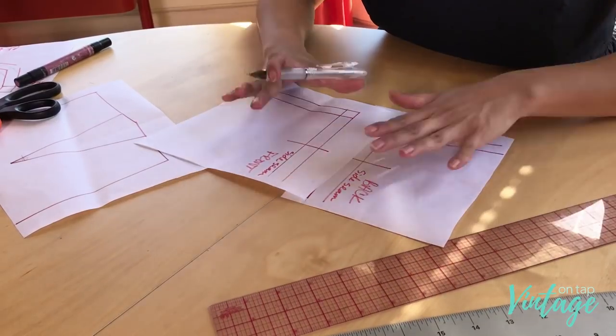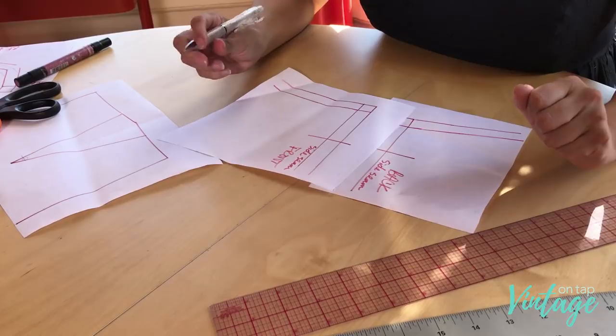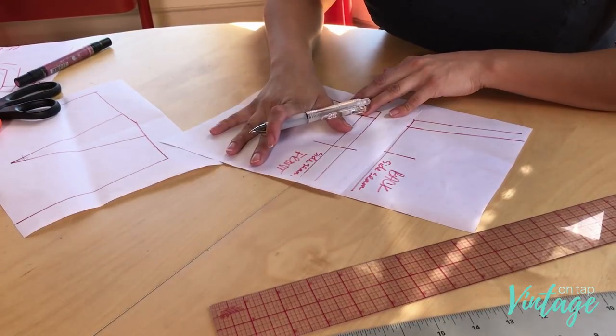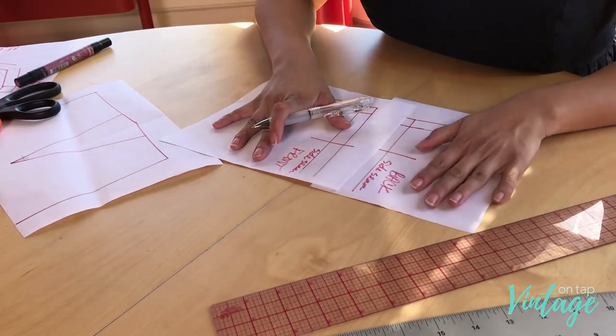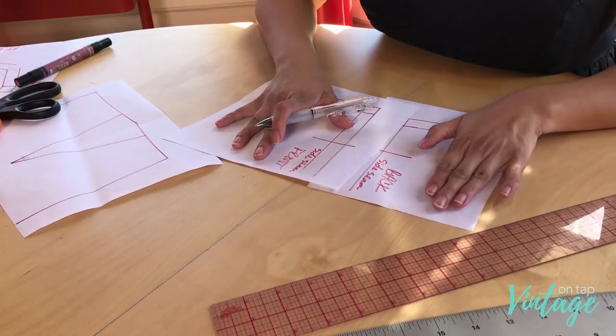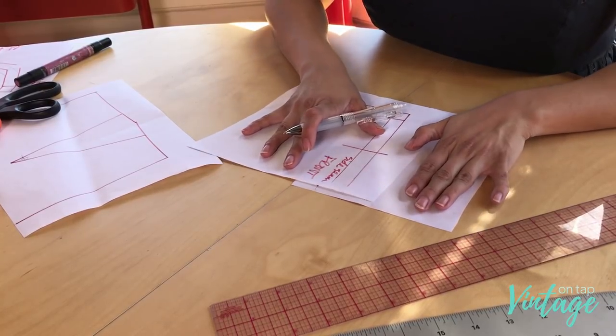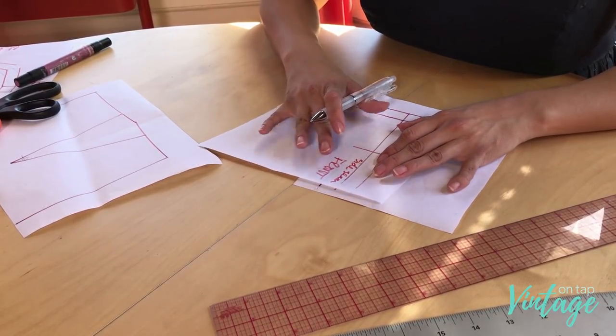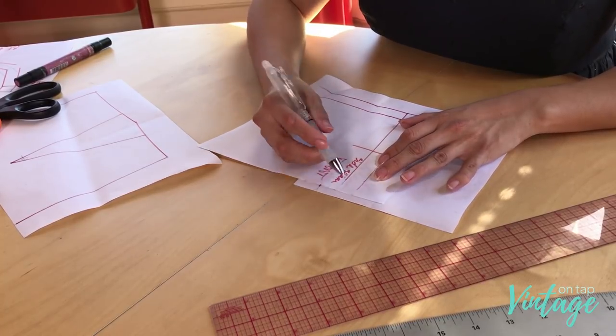The second example of when it's a good time to use your French curve is if you have two pattern pieces that are not lining up in the side seam. Let's say you've adjusted your front pattern piece and now you need to get it to match on the back. Things don't match up, right? So I'm going to walk the seam like I would if this were any other design.